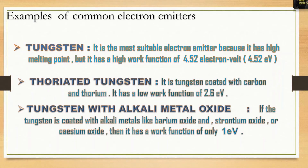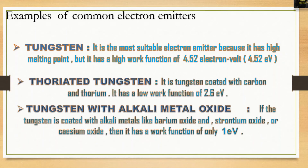We know that for a good electron emitter we must have a low work function and a high melting point. Tungsten, despite having a high melting point, also has a high work function, so it cannot be considered a good electron emitter on its own. Thoriated tungsten uses tungsten alloys; when carbon and thorium are coated on it, the work function drops to just 2.6 eV. Tungsten with alkali metal oxides can be considered the best electron emitter because it has a work function of just 1 eV and also has a high melting point.